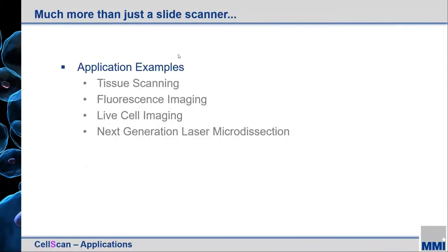What we have here is a high-performance slide scanner, but it can do very much more, by virtue of the type of platform it can be installed upon. We will cover tissue scanning — which I believe the majority of people are here for today — but we'll also go into fluorescence imaging, live cell imaging, time-lapse, and of course how this system can be utilized in conjunction with or upstream of laser microdissection.